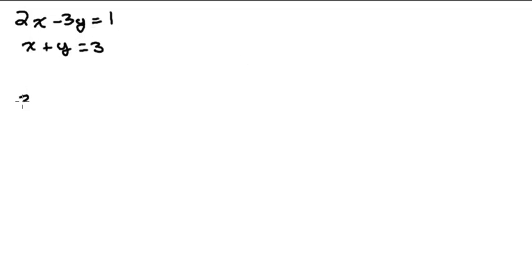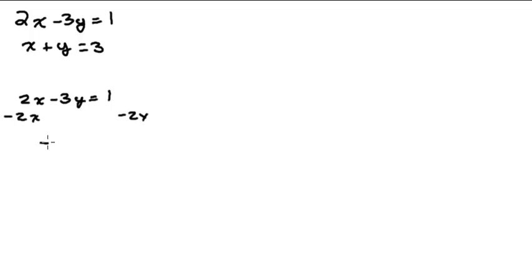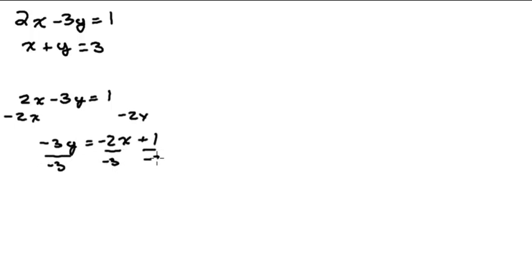Starting with the first line, 2x minus 3y equals 1, I'll solve for y by putting it in slope-intercept form. Subtracting 2x from both sides gives negative 3y equals negative 2x plus 1. Dividing everything by negative 3, I get y equals two-thirds x minus one-third.